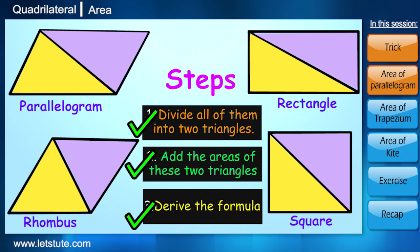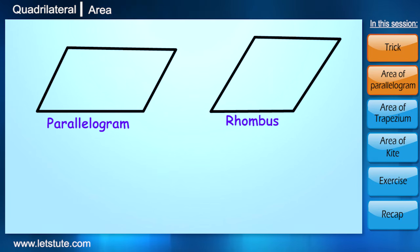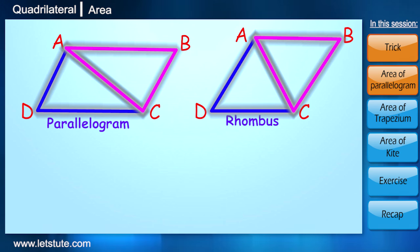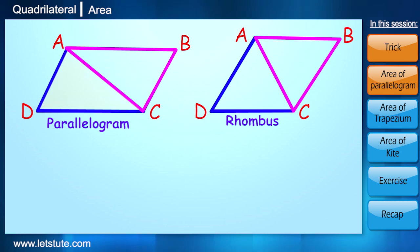First of all, we'll find the areas of parallelogram and rhombus, and then we'll go for the rectangle and square. Let's name them as ABCD. Now when we cut them, we get two congruent triangles. So here triangle ABC and triangle ADC are congruent. If we double the area of triangle ADC, it will give us total area of parallelogram ABCD. And the procedure will be same for rhombus.